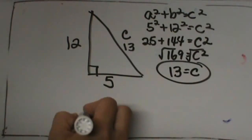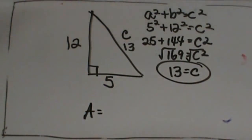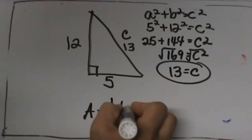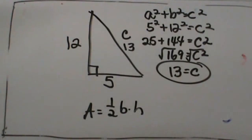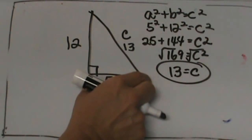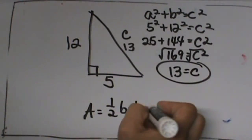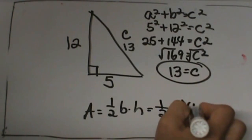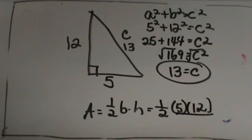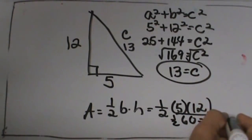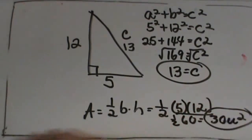Now we also need to find the area of that triangle. The area formula is one half the base times the height. The nice thing about a right triangle is the base and the height are the legs. So in this case our base is 5 and our height is 12. One half of 5 times 12 is 60, and half of 60 is 30, so this would be 30 square units — that is the answer for the area.